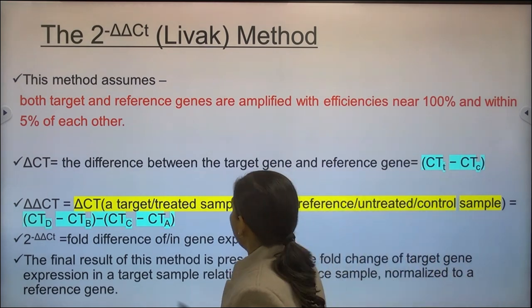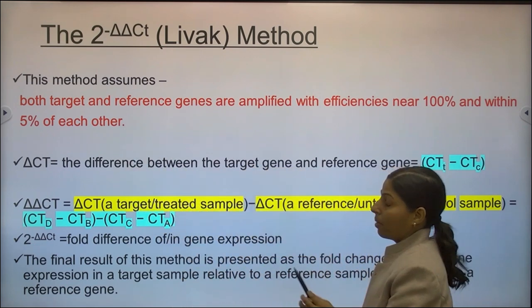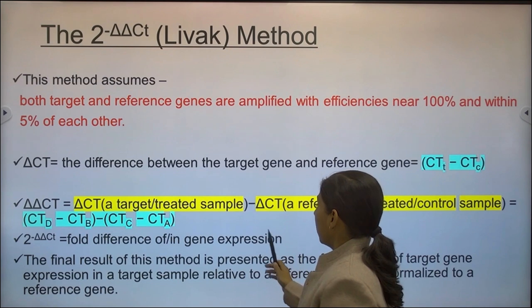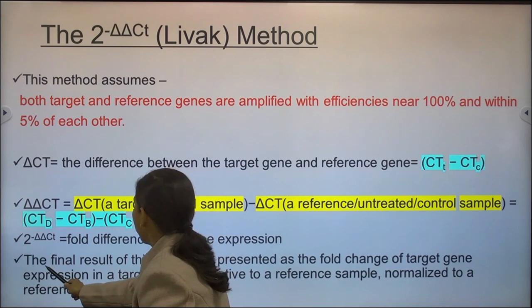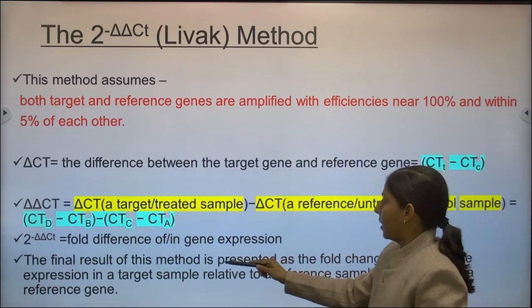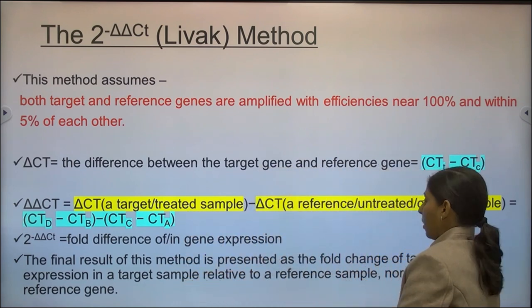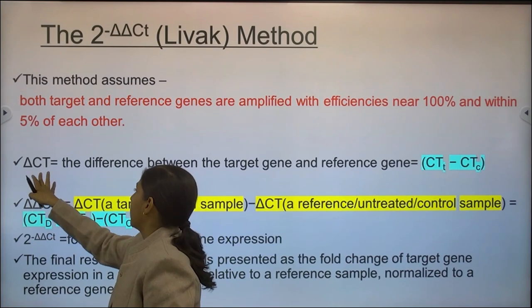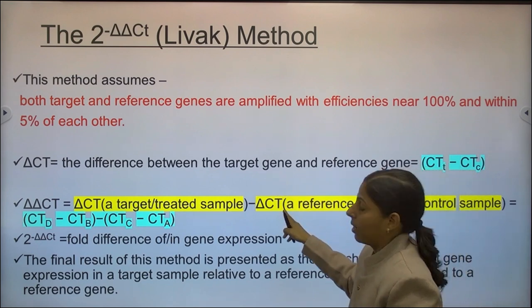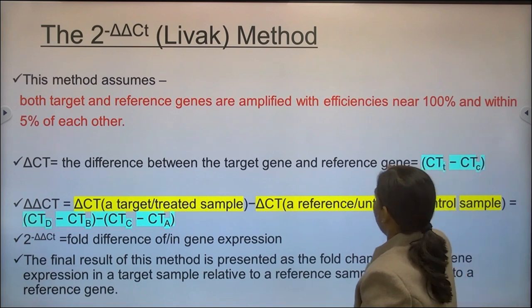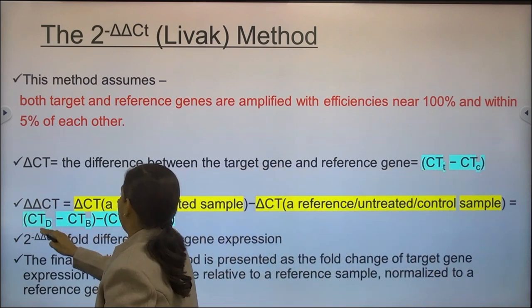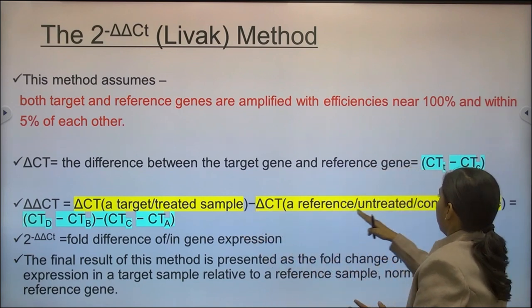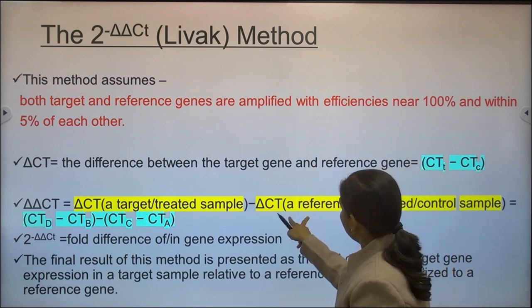The Livak method calculation is based on target and reference gene amplification with almost 100% efficiency. The formula 2 raised to minus delta-delta CT gives the fold change in gene expression compared between two conditions. The final result is the fold change of the target gene expression in the target sample relative to a reference sample, normalized to reference genes. Delta CT is the difference between the target gene and the reference gene. Delta-delta CT is the delta CT of the treated sample minus the delta CT of the control sample.